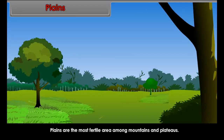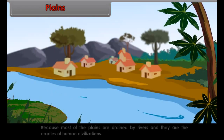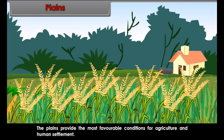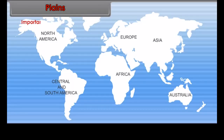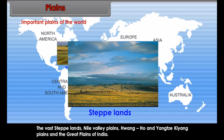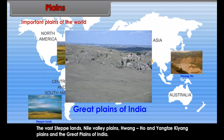Plains are the most fertile area among mountains and plateaus. The plains are more densely populated because most are drained by rivers and they are the cradles of human civilizations. The plains provide the most favorable conditions for agriculture and human settlement. In the plains, soil is very fertile, which is good for cultivation. Some important plains are the Priory Plains of North America, Pampas of Argentina, the vast steppe lands, Nile Valley Plains, Quangho and Yangtze-Kiang Plains, and the Great Plains of India.